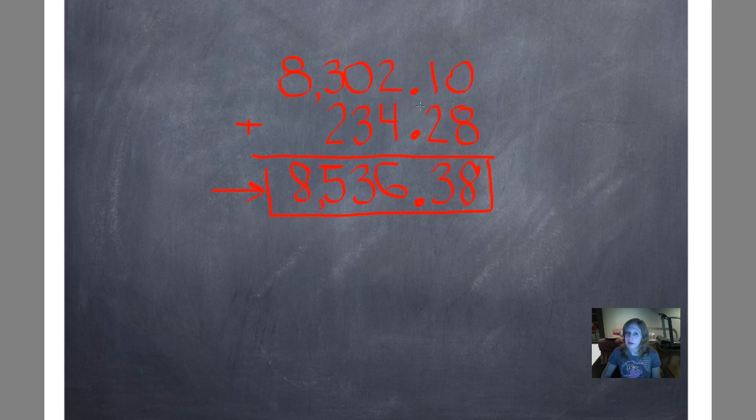Now remember I'm going to take that lower addend and write it below using my opposite operation to check it. 8 minus 8 is 0. 3 minus 2 is 1. 6 minus 4 is 2. 3 minus 3 is 0. 5 minus 2 is 3. And 8 minus 0 is 8. Matches my top answer perfectly. My top addend. So I know that my final answer is correct. Woohoo.